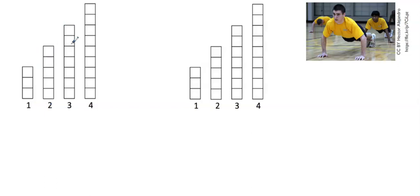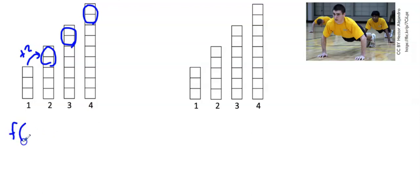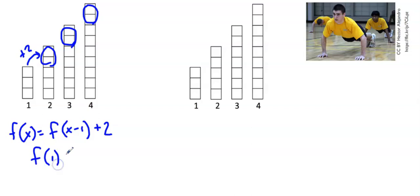I can see that two more blocks — and each block represents a push-up — so two more push-ups are being added each day. If I go from one to the other, I'm adding two each time. So our recursive equation would be f(x) = f(x−1) + 2, where f(x−1) is referring to the previous number of push-ups. This starts with day one having three push-ups.